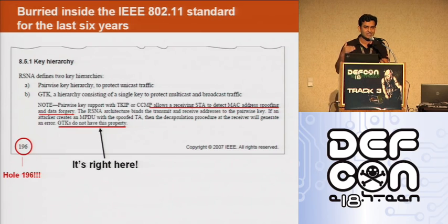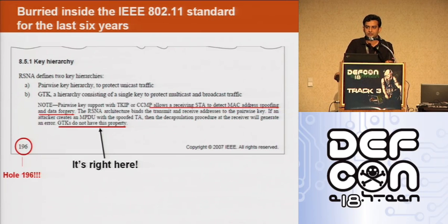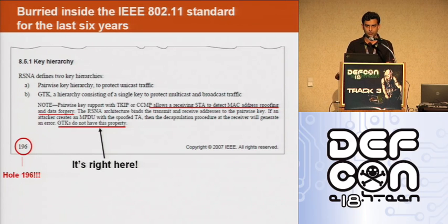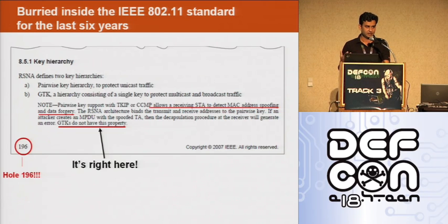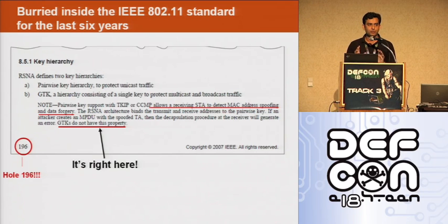If you see the last line of page 196, the designers of 802.11 have warned about the weakness of WPA2 — one key that is used in WPA2. On the last line there is something mentioned about that key: 'GTKs do not have this property.' So the designers are talking about some property of the encryption key which is lacking.